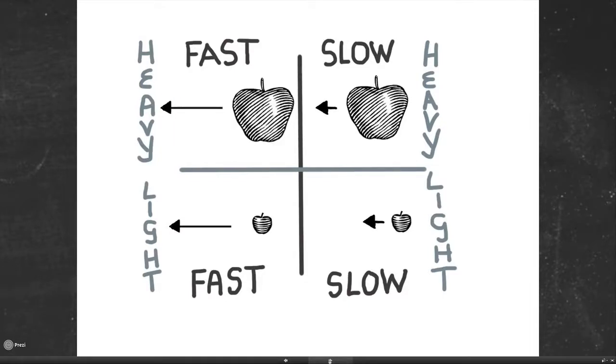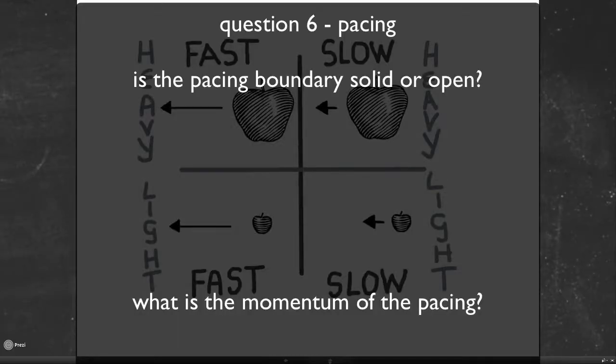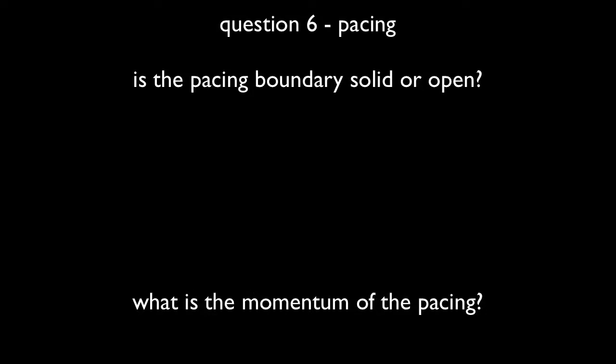When working with pacing, firstly ask yourself about the boundary strength: is there a situation where the pacing is solid, definitely given, or is it open, flexible, and adaptable to the situation at hand? Secondly, ask yourself whether the pacing has a heavy or light content element to it, and whether it's going fast or slow. Combine those two together to get momentum.